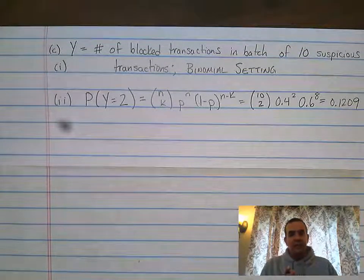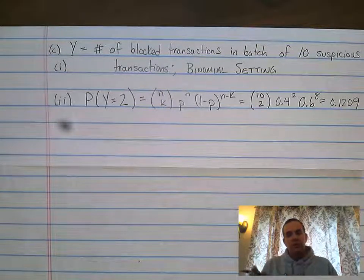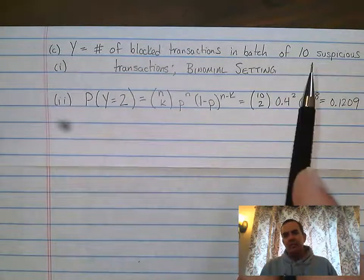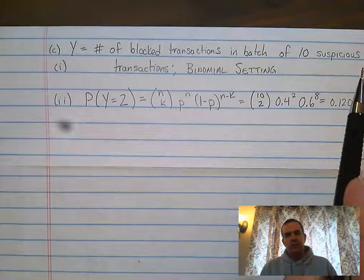So we are dealing with defining a variable. Y equals the number of blocked transactions in a batch of 10 suspicious transactions.